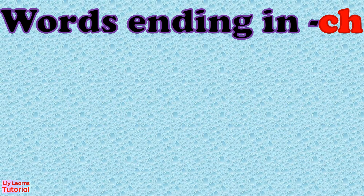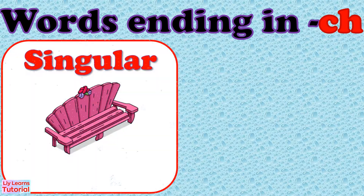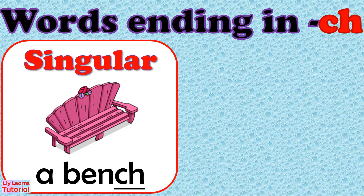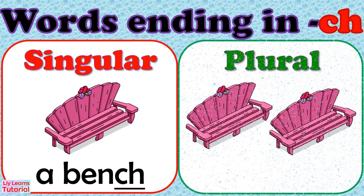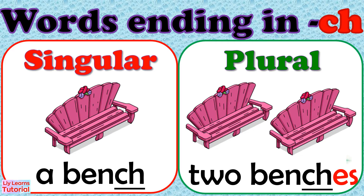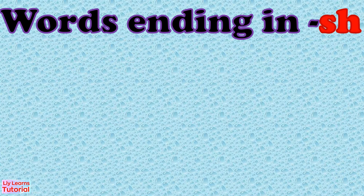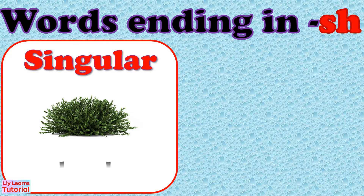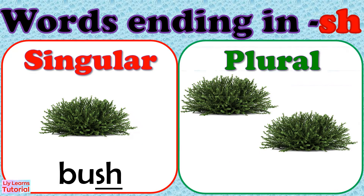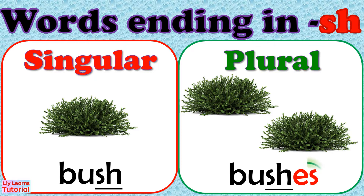For words ending in "-ch", like bench, we simply add "-es". For words ending in "-sh", like bush, we simply add "-es" to the word. Bush becomes bushes.